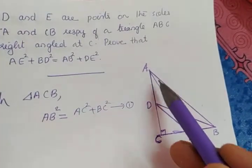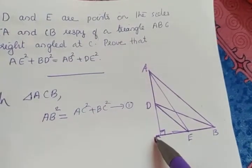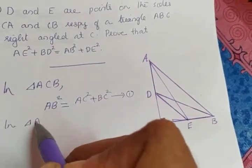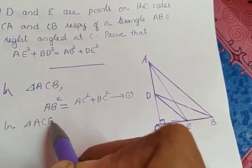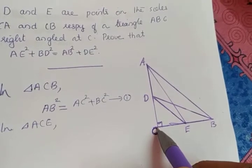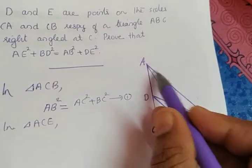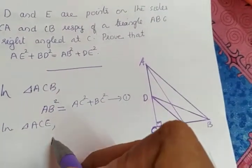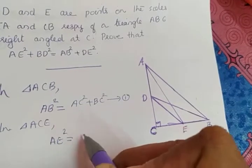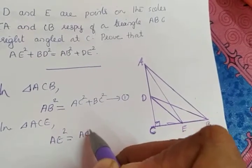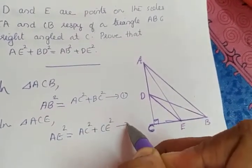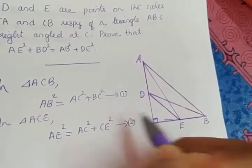Next, take triangle ACE. Here also angle C is 90 degrees, so AE will be the hypotenuse. Applying Pythagoras theorem: AE square is equal to AC square plus CE square. Let that be equation number 2.